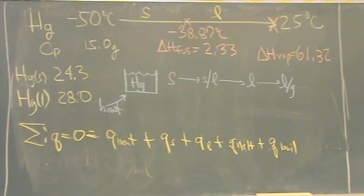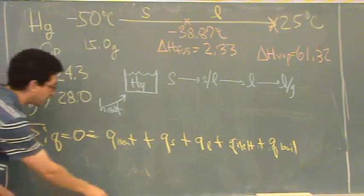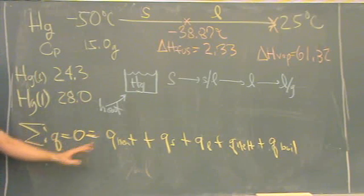So again, the q's came from whenever there was a temperature change, or in this case, a phase change. So every q's got to have a term. Basically, what you're going to say is, all this equals zero, right?